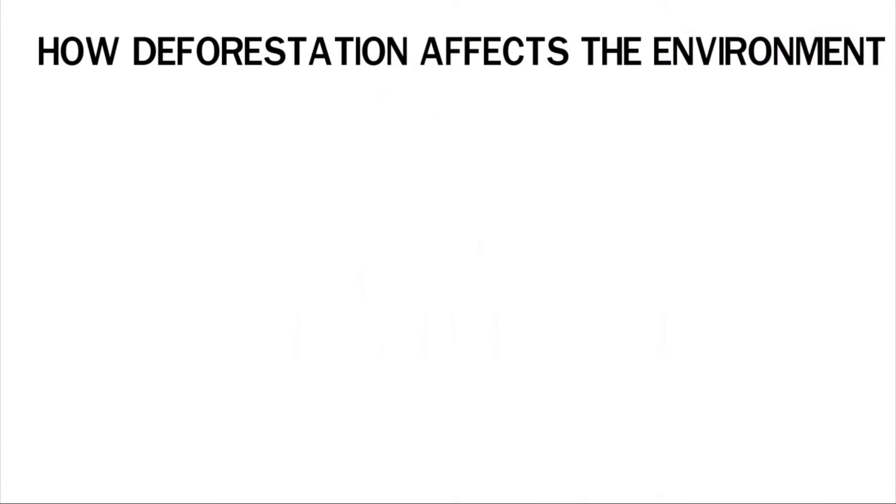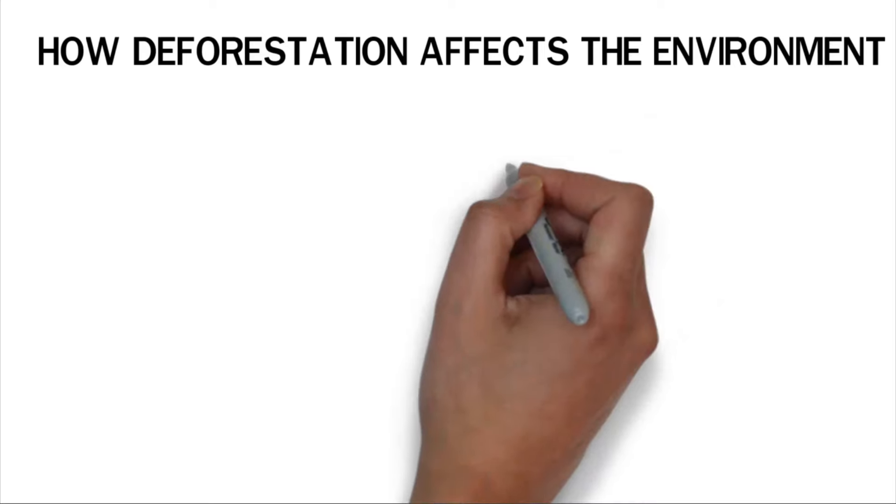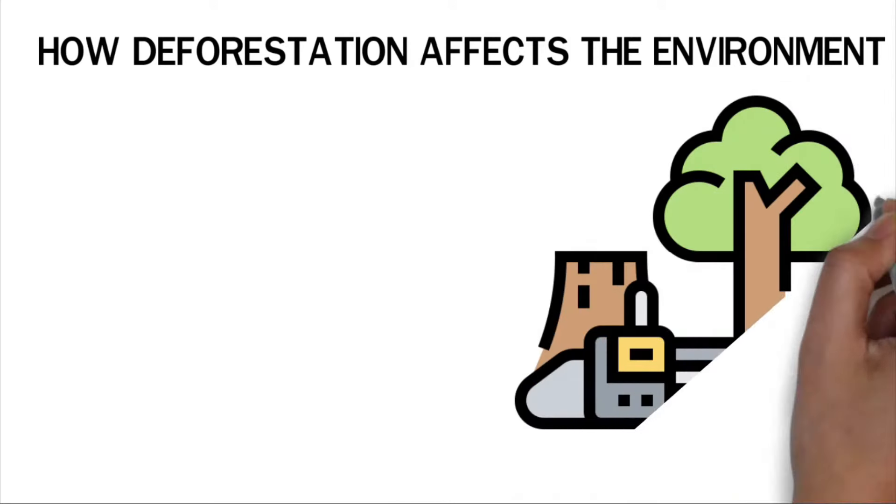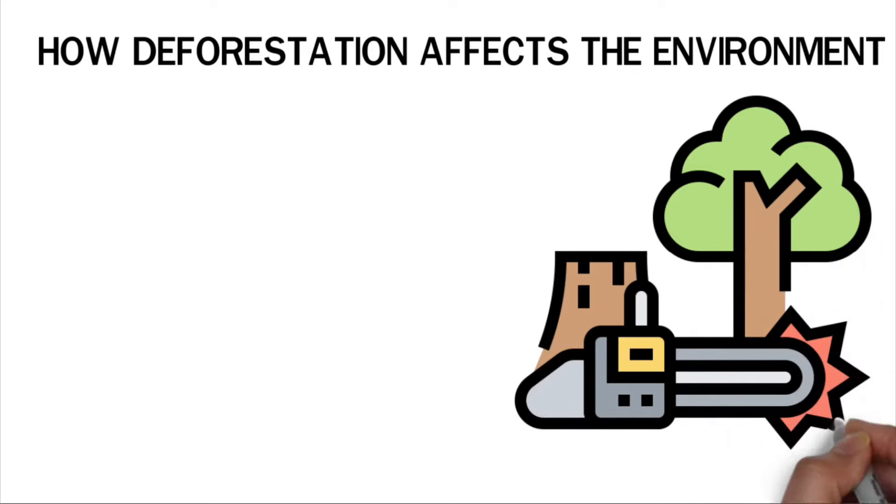How deforestation affects the environment. Deforestation is the cutting of trees and removal of forest cover from a large area without planting new ones. It is mainly caused by human activities, though deforestation can also occur due to natural disasters.